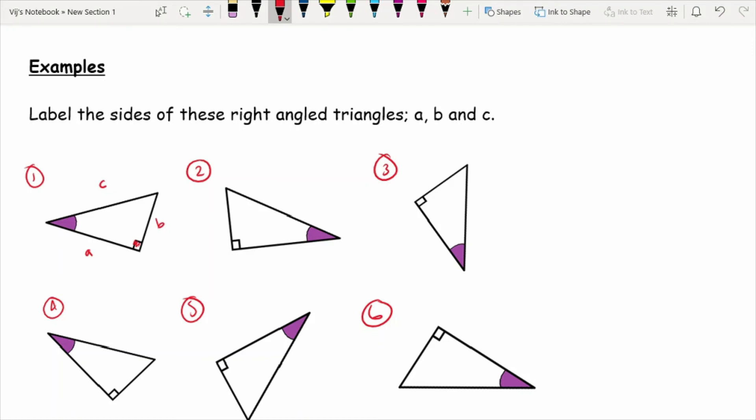For question two, again, I'm looking out for the right angle. And whichever side is opposite, that's going to be C. And your other two sides are going to be A and B. Now, don't worry too much if you've labeled your A and B different to how I've labeled it. You've got them all the way around. It's still correct.